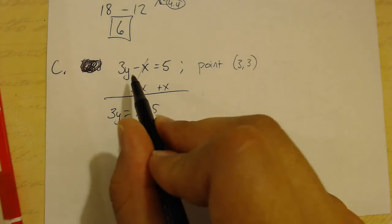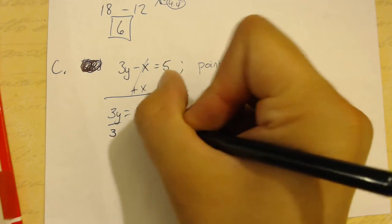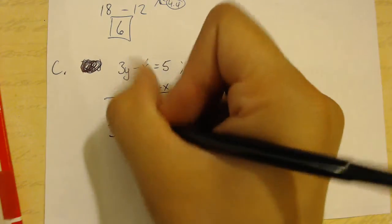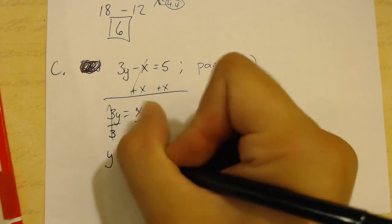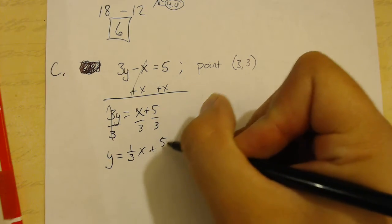And the reason why we're solving this line for y is so we can find the slope. Divide everything by 3. And we get y equals 1 third x plus 5 thirds.